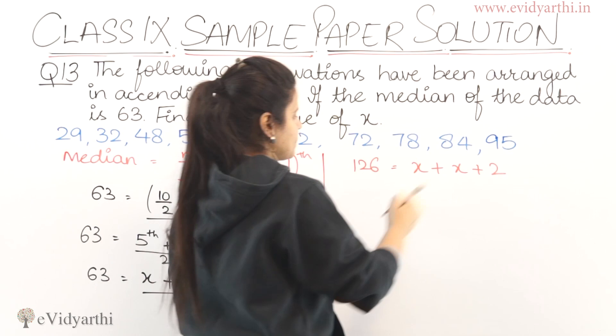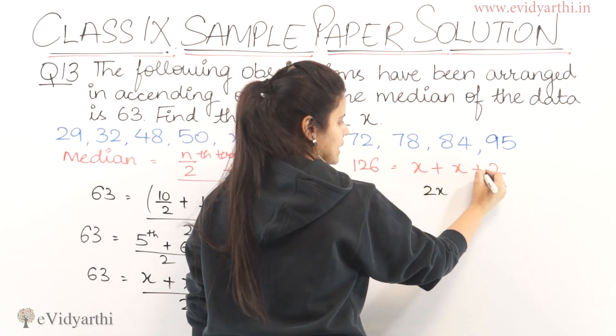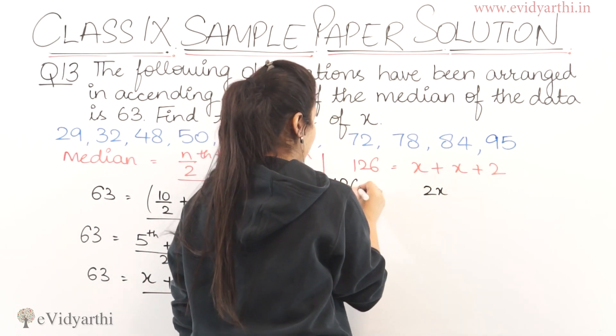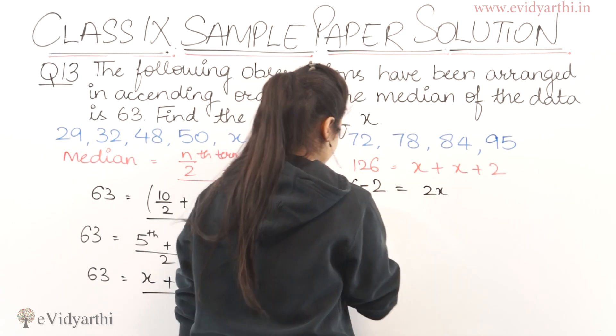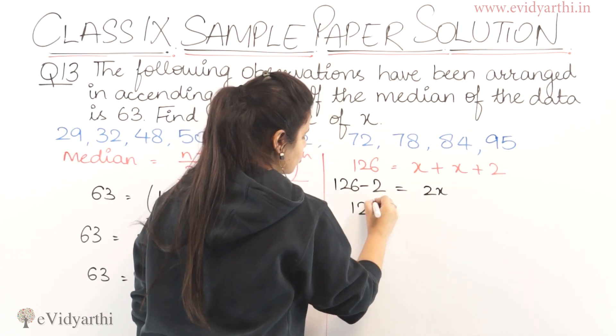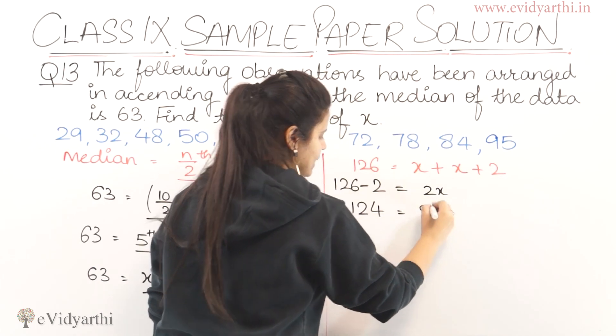Now what do we do? This will become 2x. This is 2. This is 126 minus 2. Now 126 minus 2 is 124 equal to 2x.